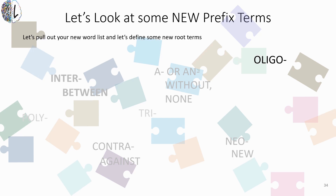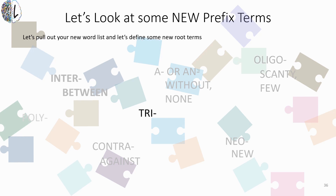Next up, this one might look a little different from a word you've seen before, but it is pronounced 'oligo' — O-L-I-G-O. Go ahead and look it up on the word list. Many word lists will tell you this means 'scanty,' however that is not a common English word. Scanty refers to being very few or very little.